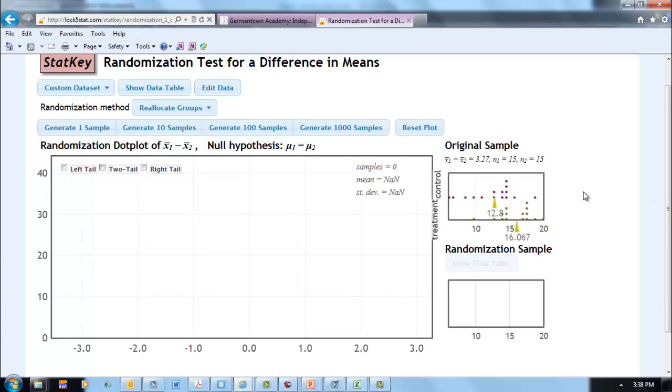Here we have comparative dot plots of our original sample. Our treatment group had a mean a little bit over 16, and our control group had a mean of 12.8. Let's see what happens if we take away the relationship between treatment and control and get a randomization sample.